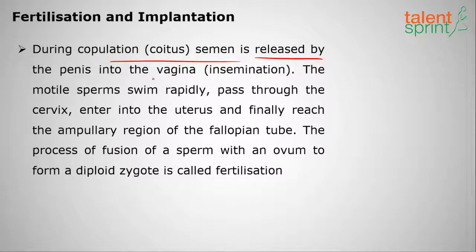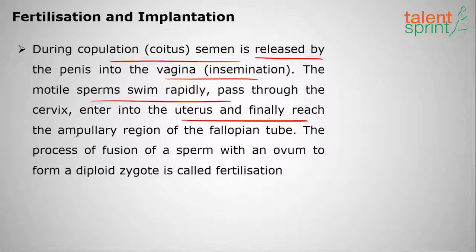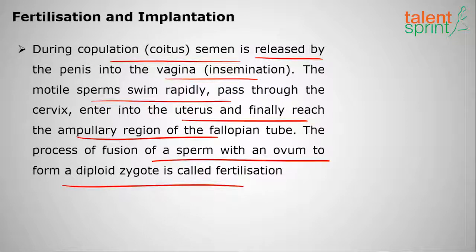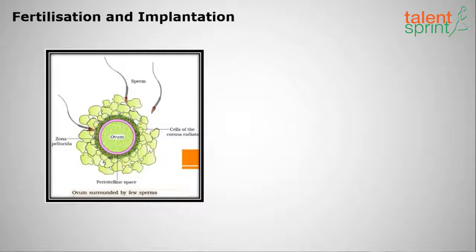The motile sperms rapidly pass through the cervix, enter the uterus, and finally reach the ampullary region of the fallopian tube. The fusion of a sperm with an ovum to form a diploid zygote is called fertilization. You can see sperms reaching the ovum — whichever swims fastest reaches the ovum first.